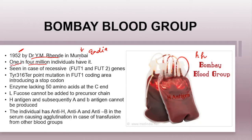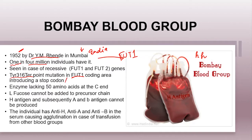This condition is very rare — so much so that only one individual out of four million has this condition. It is a very rare and unique case encountered with the recessive form of the H gene or FUT1 gene. It is caused by a point mutation at the Tyr316Ter position in the FUT1 coding area.